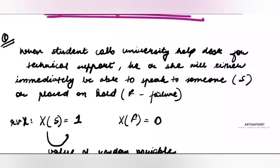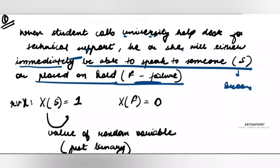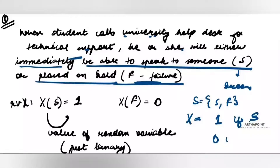Take a question: when students call the university help desk for technical support, the student will either immediately be able to speak to someone — which is a success — or be placed on hold — which is a failure. My sample space is success or failure, and I assign X the value 1 if success and 0 if failure. Because I have been able to assign numbers to my sample space, this X is now a random variable.